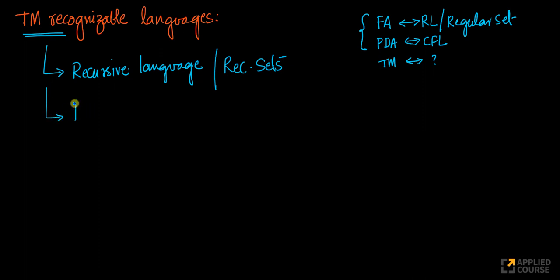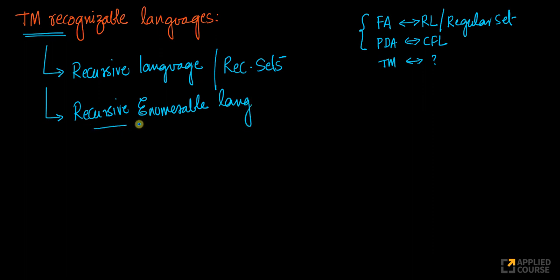There is one more language called a recursively enumerable language. If you recall, we looked at what a recursively enumerable language is when we learned about the Chomsky hierarchy.